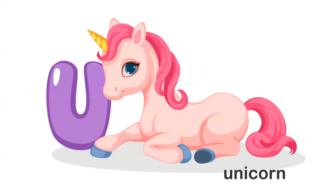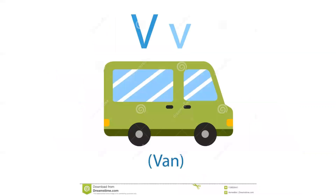U — what's this? It's amazing! Correct! It's unicorn. U for unicorn. V — V is for van.